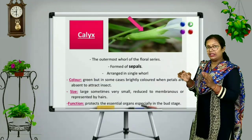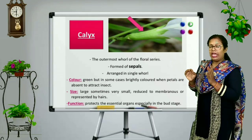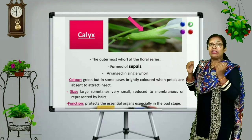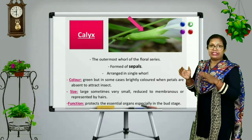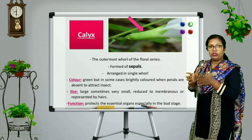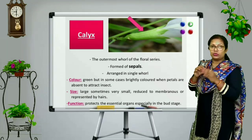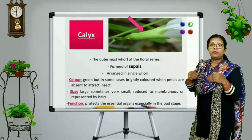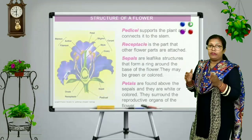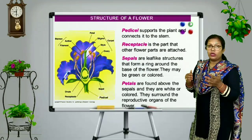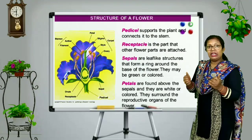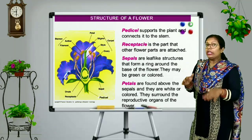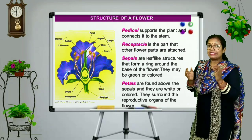Sepals are small green-coloured leaf-like structures and form the outermost whorl of the flower that protects the flower in the bud stage — giving protection all around. Not only this, in the bud stage sepals also provide nutrition to the flower, because they are green and participate in photosynthesis.